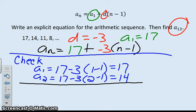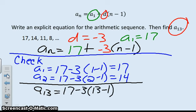So I'm going to find a sub 13. So I have 17 minus 3 times 13 minus 1. Use a calculator. What are you doing now? I'm finding the 13th term in the sequence. 15 minus 3 times 13 minus 1. I got negative 19. Okay. So the 13th term is negative 19.